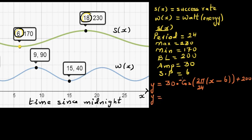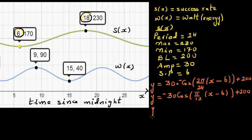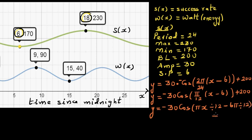Simplifying, y equals minus 30 cos of (π/12 times (x minus 6)) plus 200. To enter this in the calculator, write it as: minus 30 cos(πx/12 minus 6π/12) plus 200. This will give you the perfect graph on a graphing calculator.